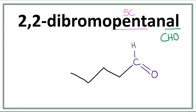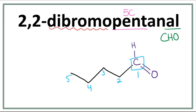Let's number these carbons. Remember, the carbon in the functional group is always the first carbon. The second carbon, the third carbon, the fourth carbon, and the fifth carbon. Now this 'dibromo' here means that there are two bromines attached to this aldehyde, both of them attached on the second carbon right here.